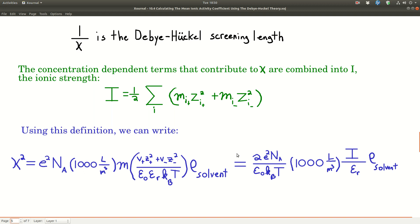One over kappa is called the Debye-Huckel screening length. As kappa gets bigger, so the molality gets bigger or the charges get larger, that sphere gets smaller and smaller. In other words, the screening happens faster and the potential decreases faster as we go out from the nucleus.